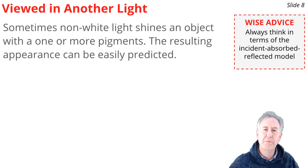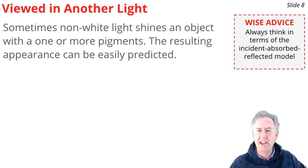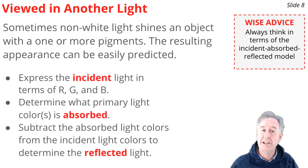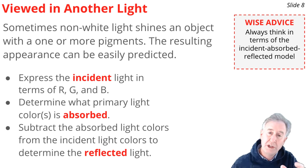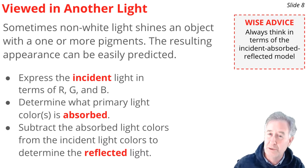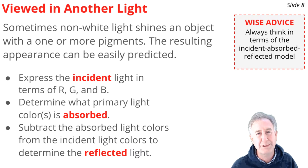That football example used white light, but what if it's not white light — what if it's yellow, magenta, or cyan light? You do the same thing using the Incident-Absorbed-Reflected model. Begin by identifying what primary colors of light are incident on the object and express them in terms of red, green, and blue. Then use the color wheel to figure out which incident colors get absorbed by the pigment. Finally, subtract the absorbed colors from the incident colors — what remains is reflected to your eye and determines the color appearance.